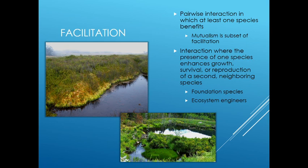Where I started with mutualism, we should really think about facilitation as the overarching framework for beneficial interactions. Facilitation is a pairwise interaction in which at least one species benefits. Mutualism is actually a subset of facilitation where both species benefit. Another way to define it is an interaction where the presence of one species enhances the growth, survival, or reproduction of a second neighboring species — meaning there's a direct interaction between these two species.